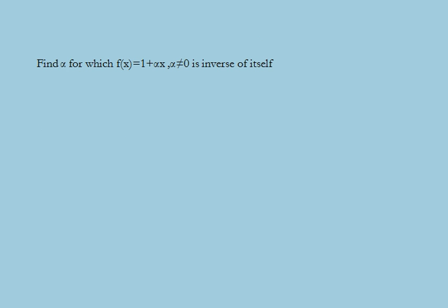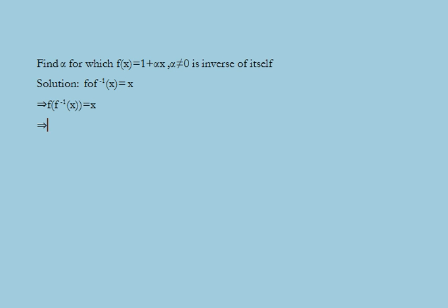Next, we find the value of the parameter α for which f(x) = (1 + αx) is the inverse of itself, where α ≠ 0. Clearly f(x) = 1 + αx is a bijection from ℝ to itself. From the condition f(f⁻¹(x)) = x, we get f(f⁻¹(x)) = 1 + α·f⁻¹(x) = x, which gives f⁻¹(x) = (x - 1)/α.